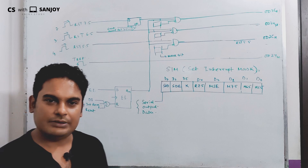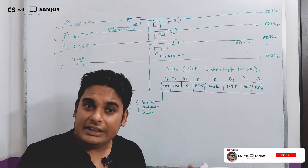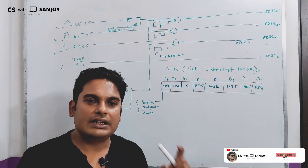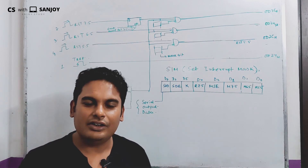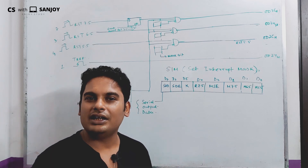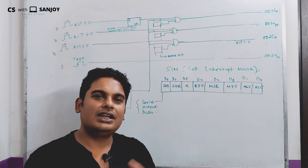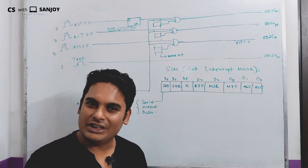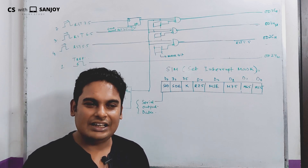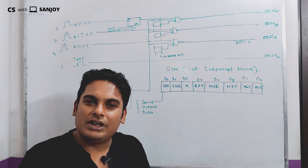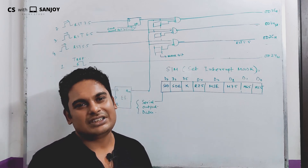The data bus is 8-bit, D0 to D7, carrying 8-bit data through the bus lines. By default, parallel communication is the standard. If we have the system — for example, a monitor — there is an LPT port, a parallel port, and a USB port; there is also a serial port.